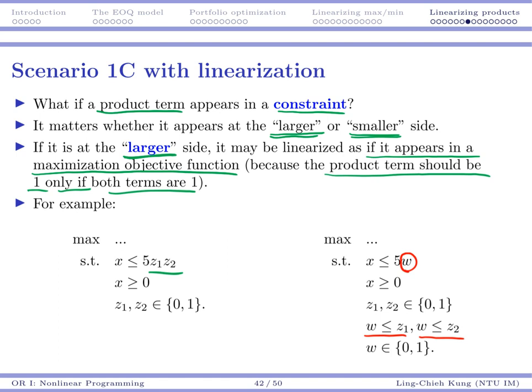All right? Only if your z1 and z2 are both 1 so that you may set your w to be 1. And then this constraint can be x less than or equal to 5, which is indeed less than or equal to 5 if z1 and z2 are both 1.